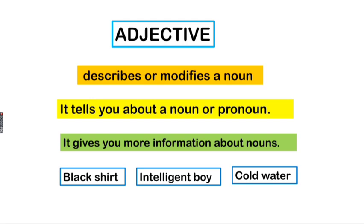Adjectives describe or modify a noun. An adjective tells you about a noun or a pronoun and gives you more information. For example, when I say 'shirt,' the adjective tells you the color of the shirt. In example two, 'boy' is a noun, but the adjective gives information about that boy — that he is intelligent. In example three, the adjective tells us that the water is cold.